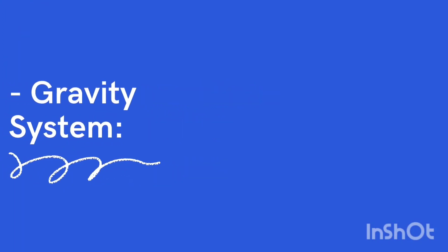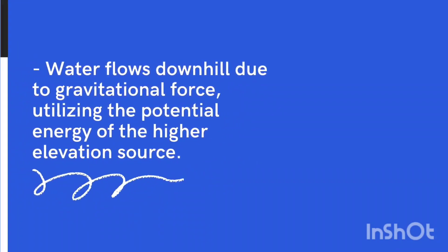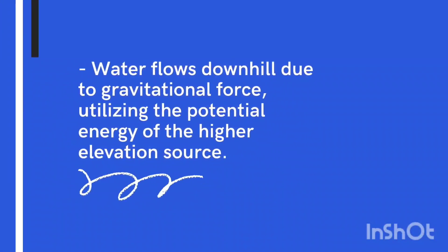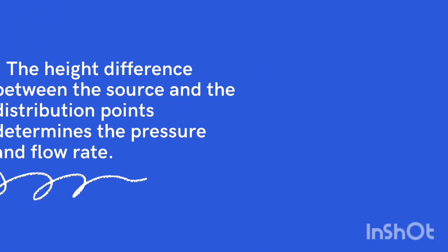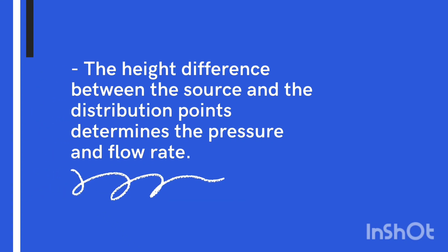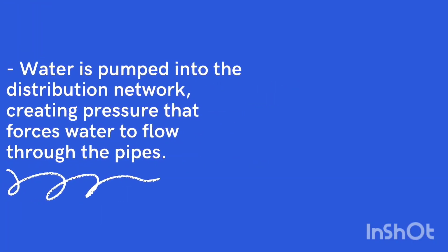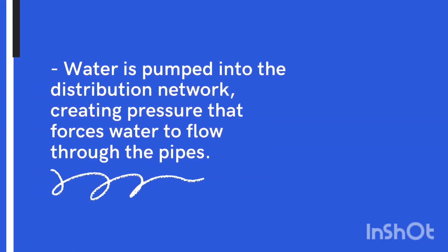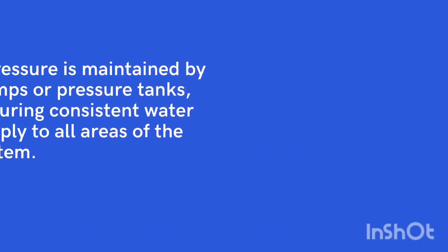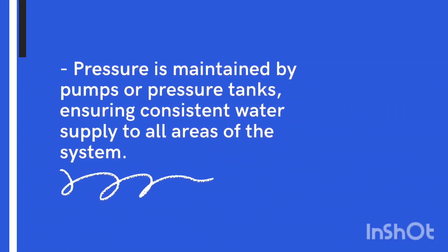Principle of Operation — Gravity System: Water flows downhill due to gravitational force, utilizing the potential energy of the higher elevation source. The height difference between the source and the distribution points determines the pressure and flow rate. Pressurized System: Water is pumped into the distribution network, creating pressure that forces water to flow through the pipes. Pressure is maintained by pumps or pressure tanks, ensuring consistent water supply to all areas of the system.